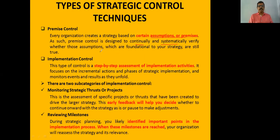The second type is called implementation control. It is a step-by-step, sequential, and systematic process. In this step, they assess whether the existing strategy is implemented properly or not. There are two types of implementation control: the first is monitoring strategic thrusts or projects, which tracks feedback regarding the strategy; the second is called review milestones, in which the strategic performance is checked over a specific period of time continuously.